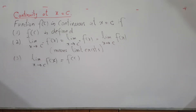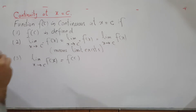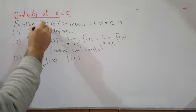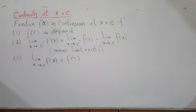In this video we will discuss continuity, discontinuity, and different types of discontinuity. First, what do we mean by continuity of a function at some point x equals c? So if you have a function f of x, it is continuous at x equals c if the following conditions hold.